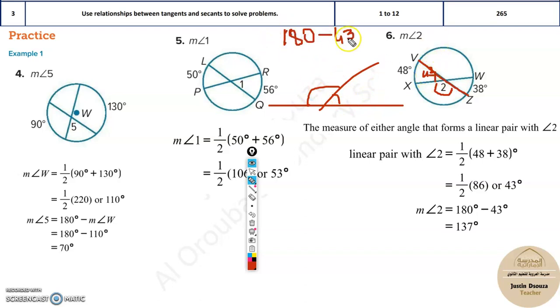180 minus 43 will be the remaining angle, because the total is always 180 and I found out one of the angles is 43. What is the remaining angle? Subtract it, you will get the answer. It's 137.